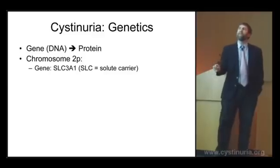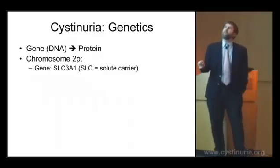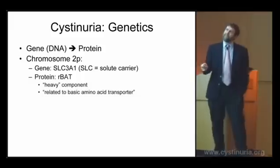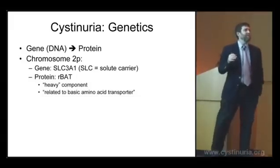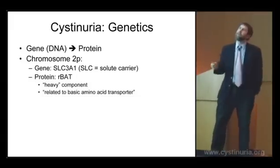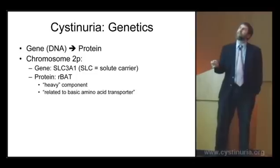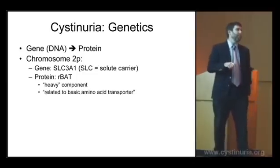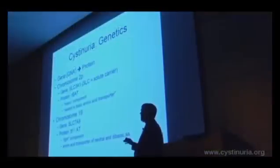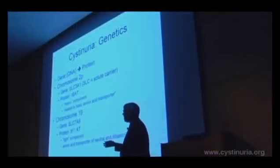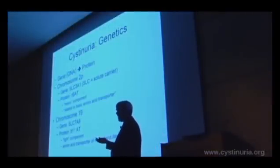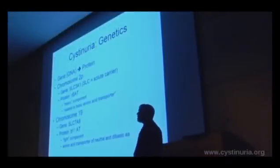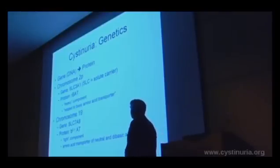SLC3A1 codes for a protein usually called RBAT — the heavy component of the cystine transporter. RBAT stands for 'related to basic amino acid transporter.' Originally it was 'RAT basic amino acid transporter,' but they wanted people to know they had the same molecule too, so they took the RAT part out and made the R stand for 'related,' which was a kind gesture.